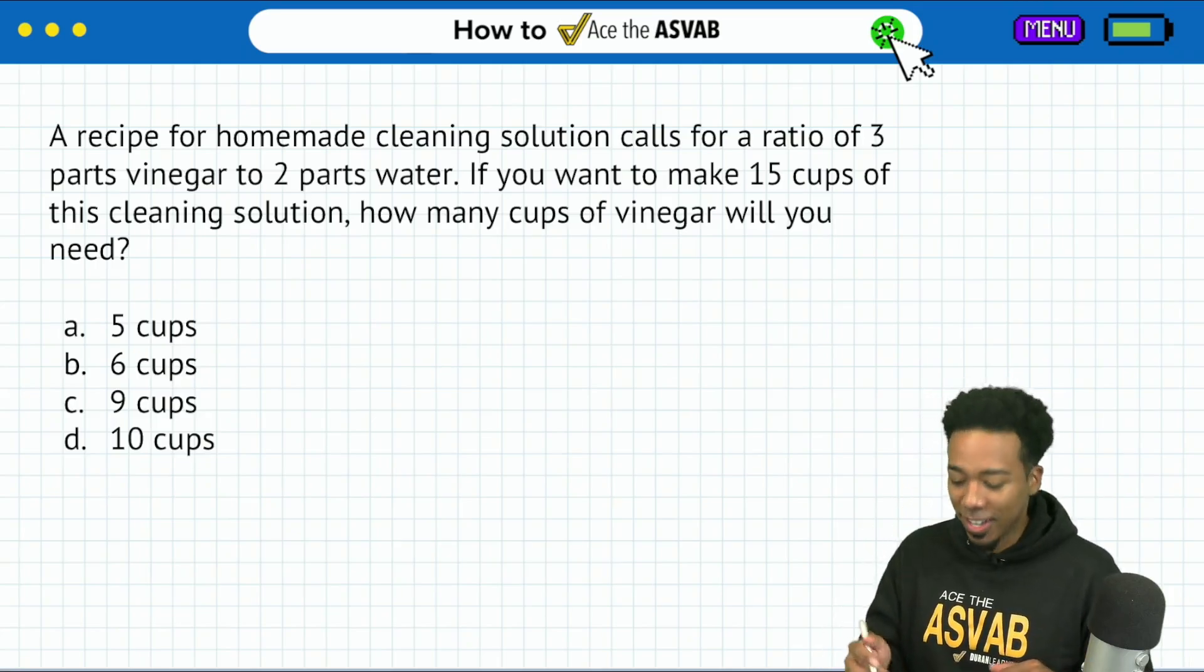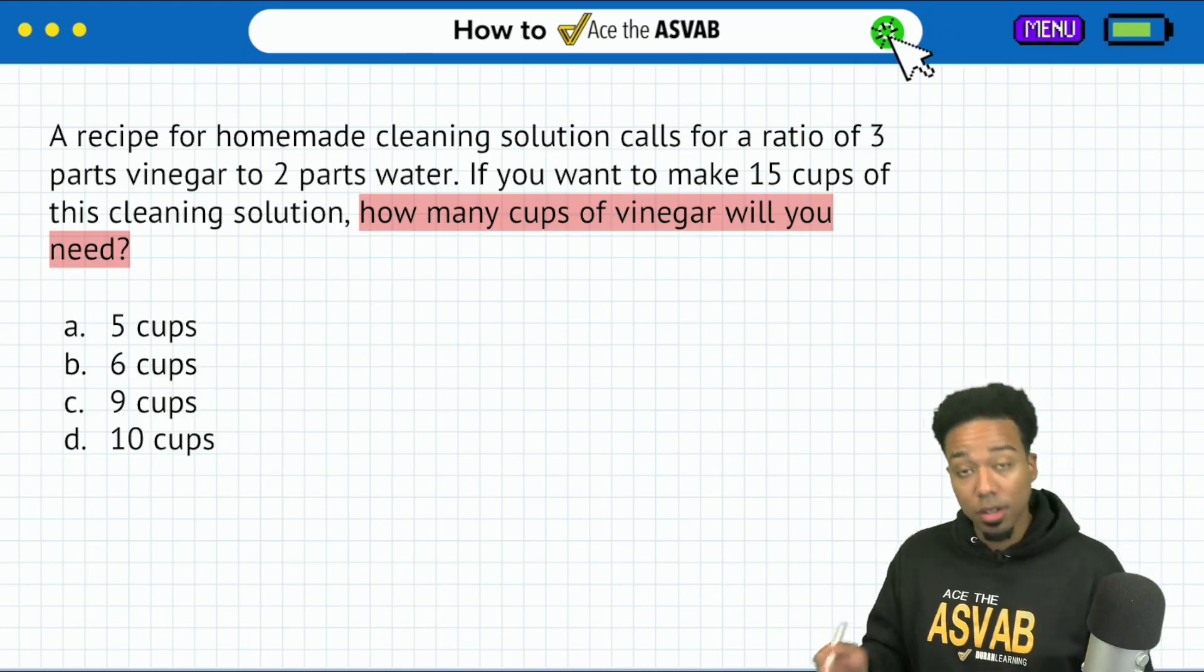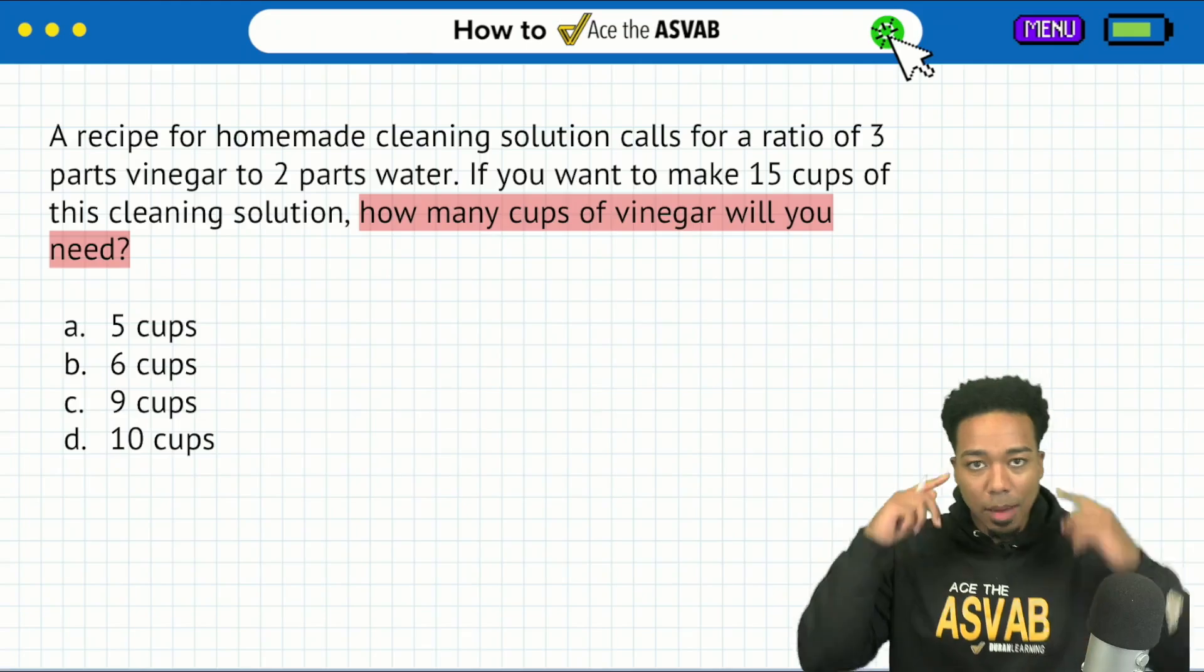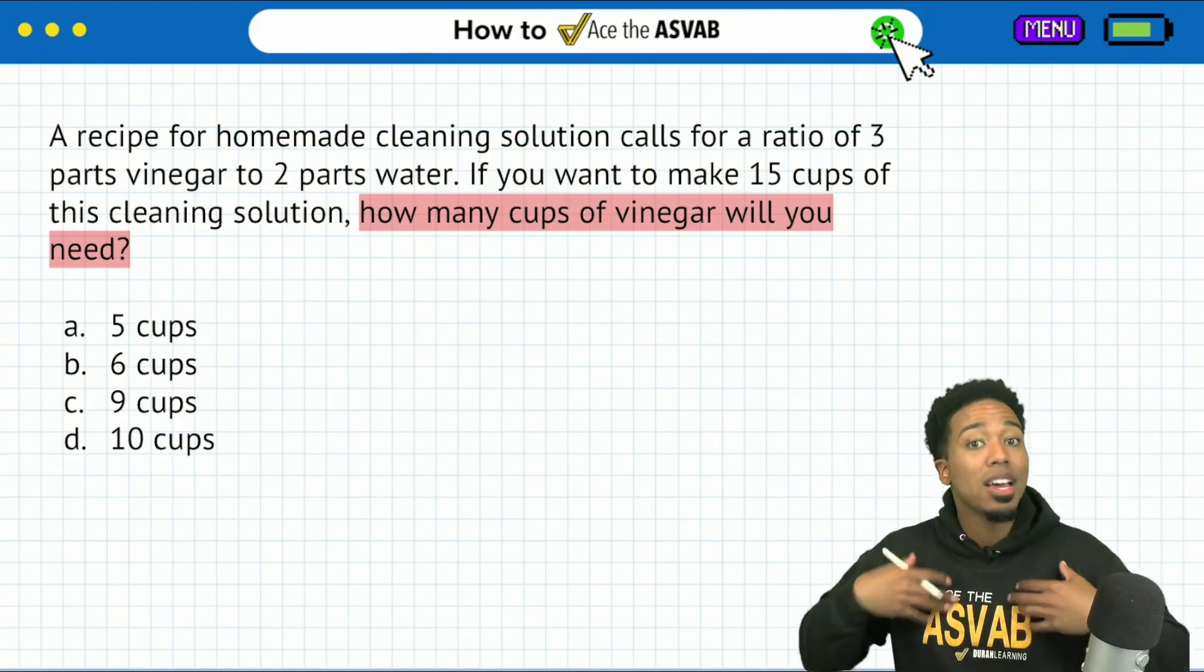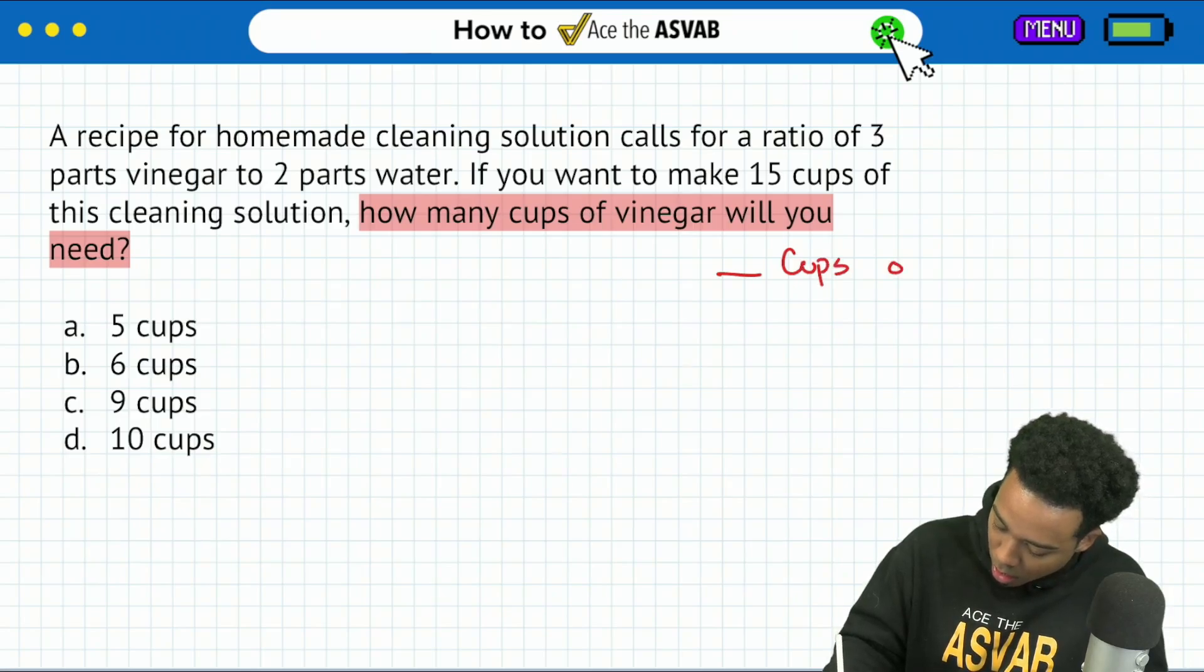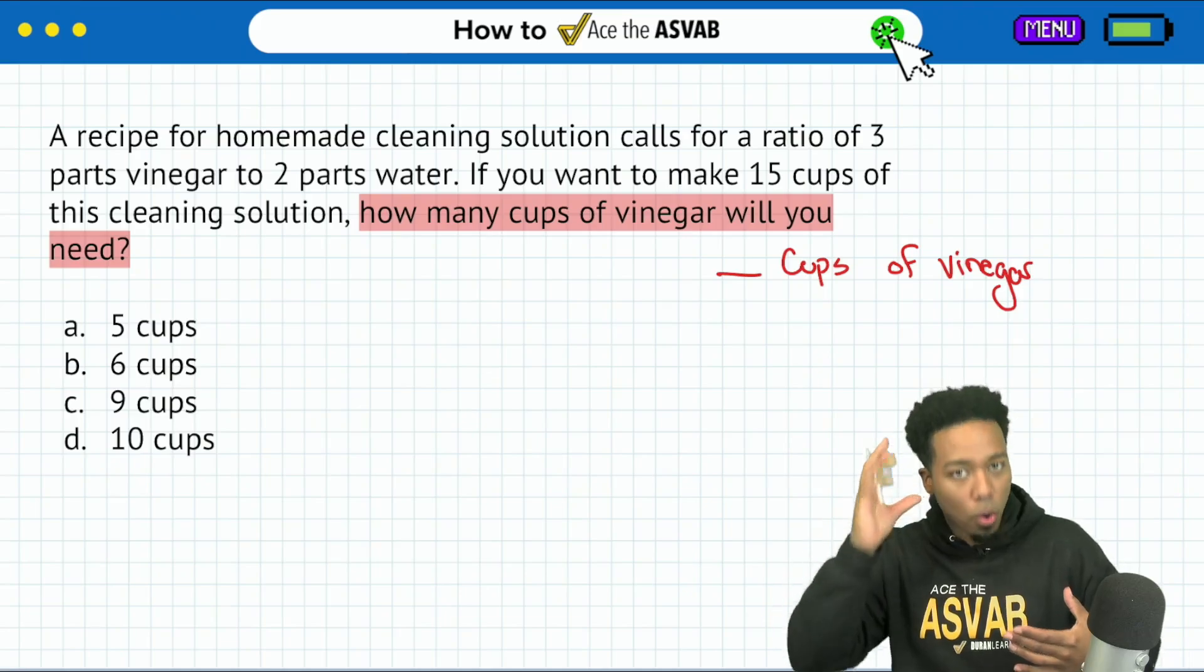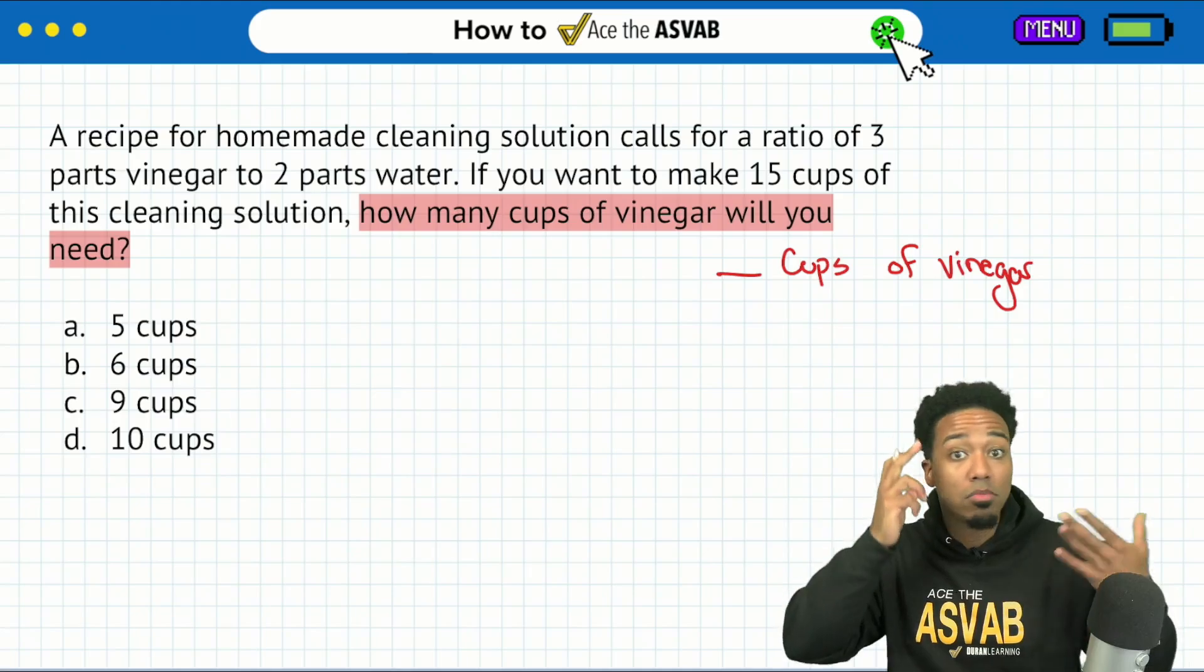Let's get the job done. First things first, we've got to read the question. So the question says, how many cups of vinegar will you need? Okay, so immediately I'm orienting myself around the idea that we're talking about vinegar. I want to find out the number of cups of vinegar. So I'll say blank cups of vinegar. Next up, let's move forward and orient our minds around asking, what information do we have that's connected to the vinegar?